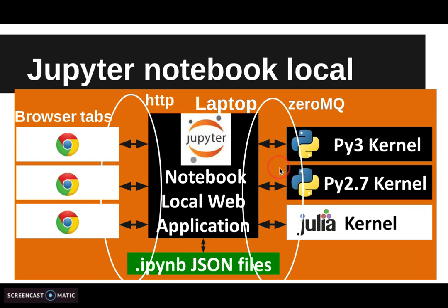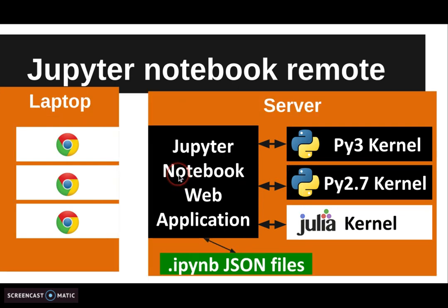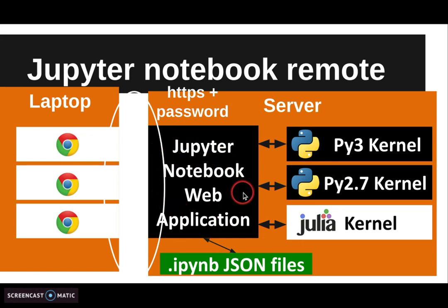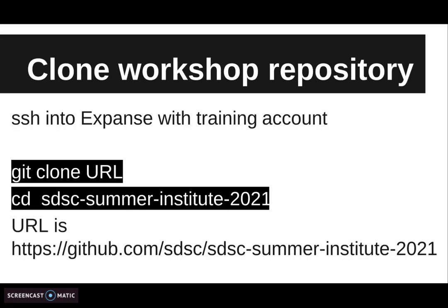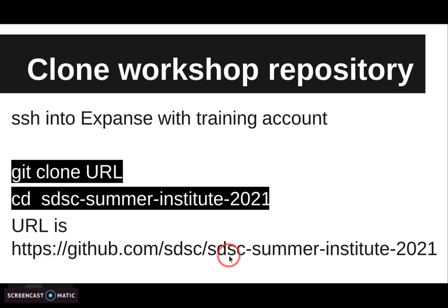There is another package handling communication on this side — this is web technology, so of course it can run remotely. Here we have our laptop executing just the front end, and then you connect to your Jupyter session running on the computing node of Expanse. Both the web application and the kernels are running on that computing node. First, make sure you have the repository with the material checked out on Expanse — SSH with your training account, do git clone with the Summer Institute URL so you have all the material for this session available.